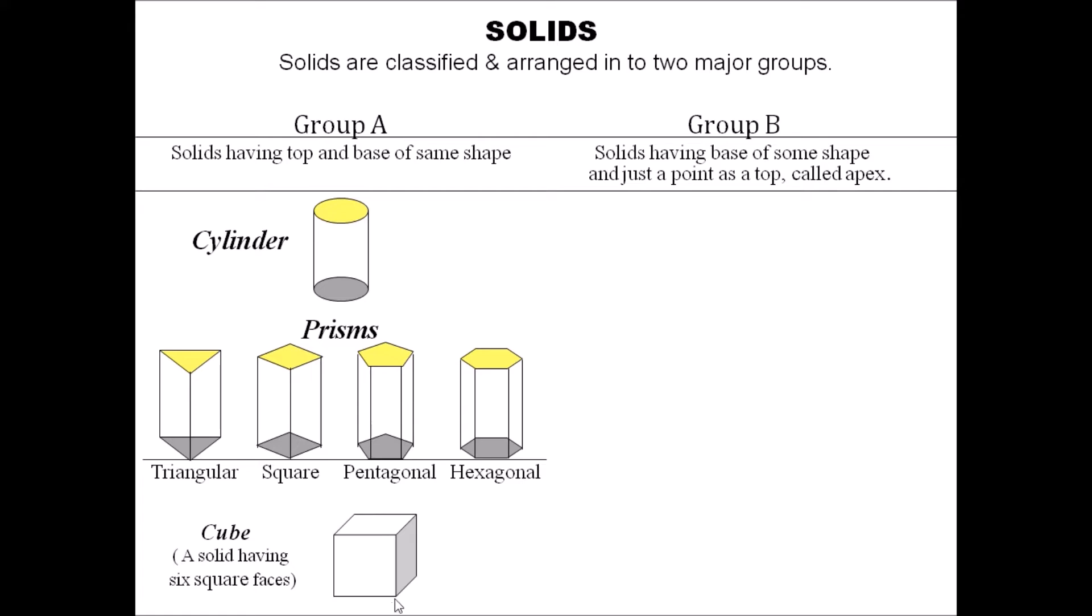In Group B we see cone, where the base is a circle and at the top we will have an apex. Similar one for pyramids—we will have different shapes of the base, at the top we will always have an apex.